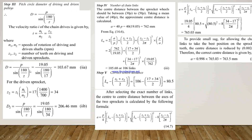After substituting the values, the pitch circle diameter of the driving sprocket D1 = 103.67 mm and the driven sprocket D2 = 206.46 mm.